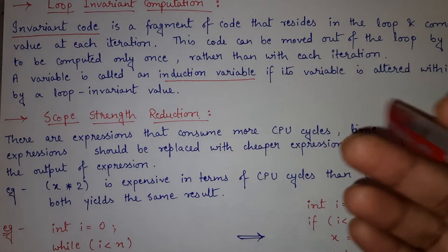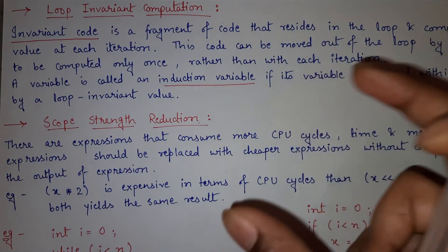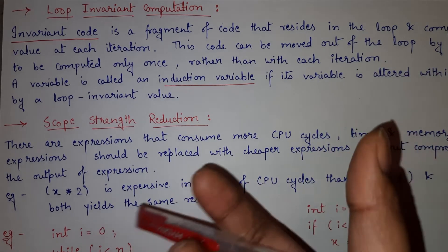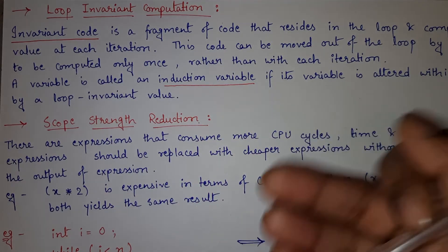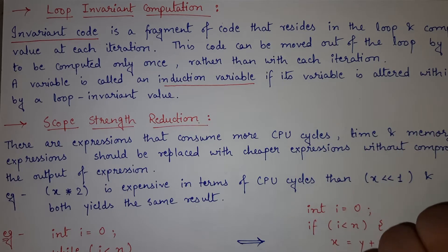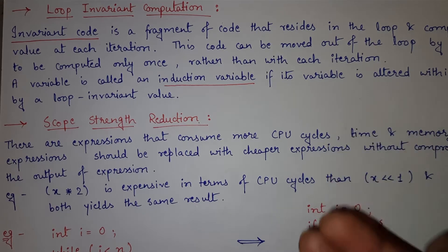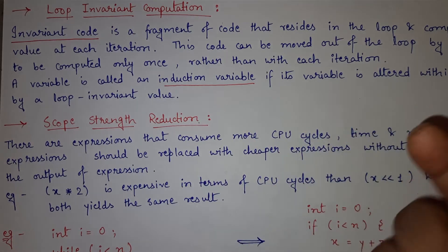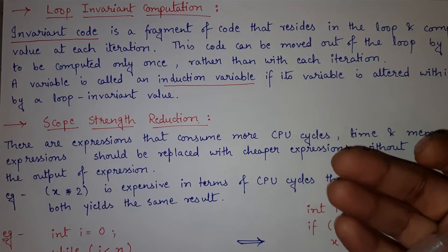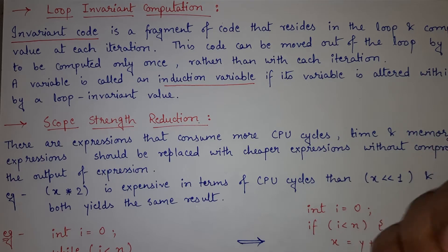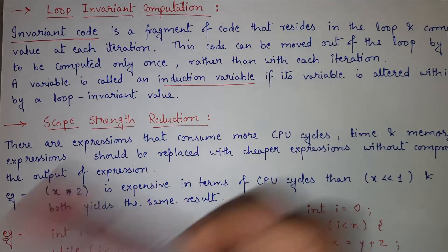In simple terms, whenever we have any loop — a for loop, while loop, whatever it is — and inside the loop there is any fragment of code that always gives us a constant value, in every iteration we are evaluating it and it always gives a constant value. So instead of putting that piece of code inside the loop, we can move it outside. That way it will be evaluated only once, and we can save a lot of time and memory. This is how loop invariant computation works.